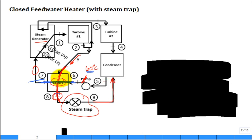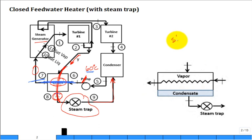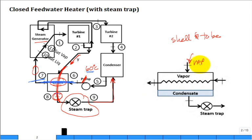The closed feed water heater is basically a shell-and-tube heat exchanger. On the shell side, steam comes in — it could be a two-phase high-quality mixture, saturated vapor, or slightly superheated vapor. On the shell side going out, you have condensate. What happens is: steam vapor contacts the colder tubes, condenses on them, drips off, and collects at the bottom. As it condenses on the tubes, it transfers heat into the colder fluid inside the tubes, heating it.